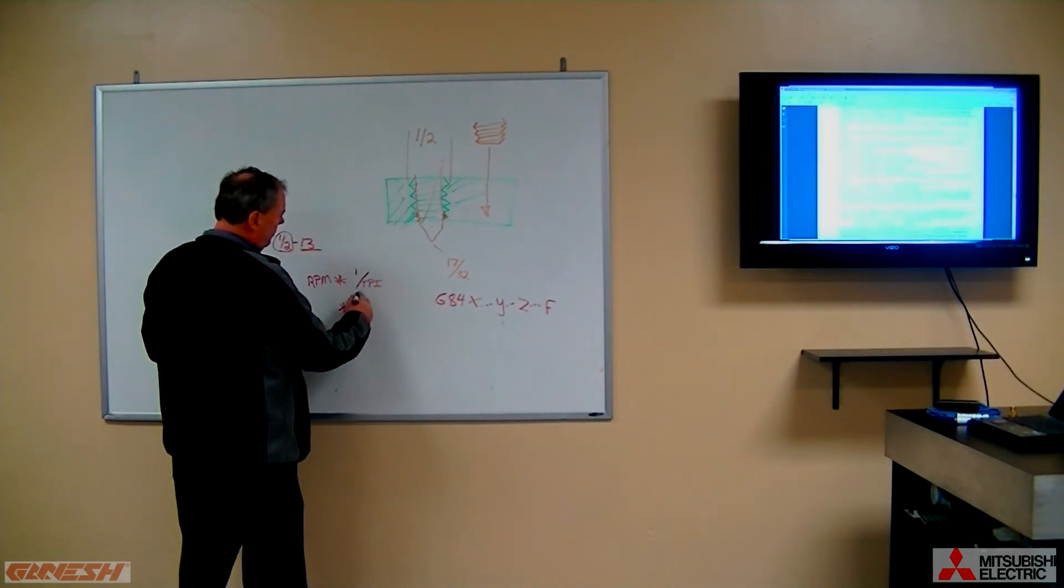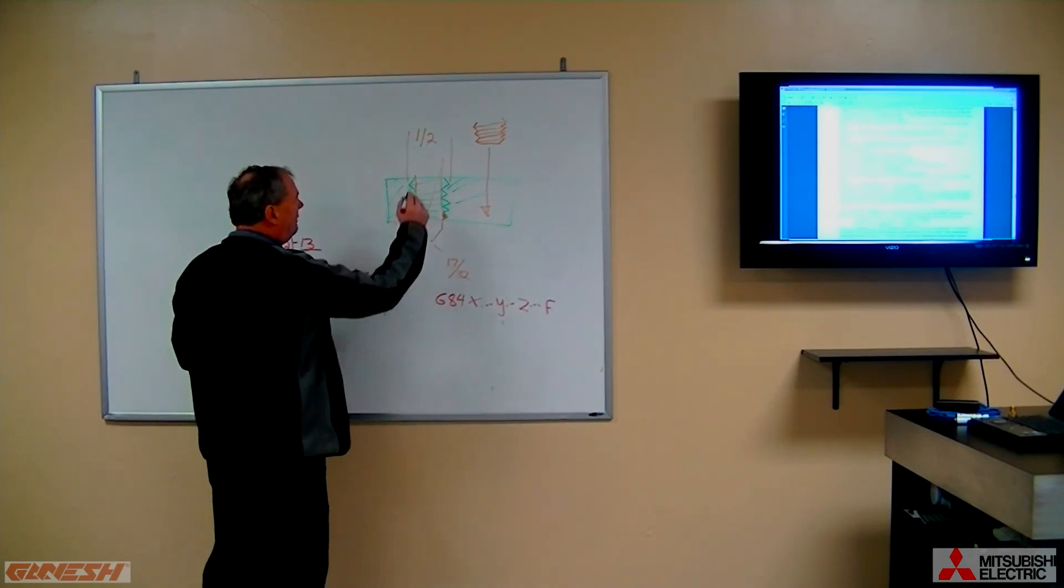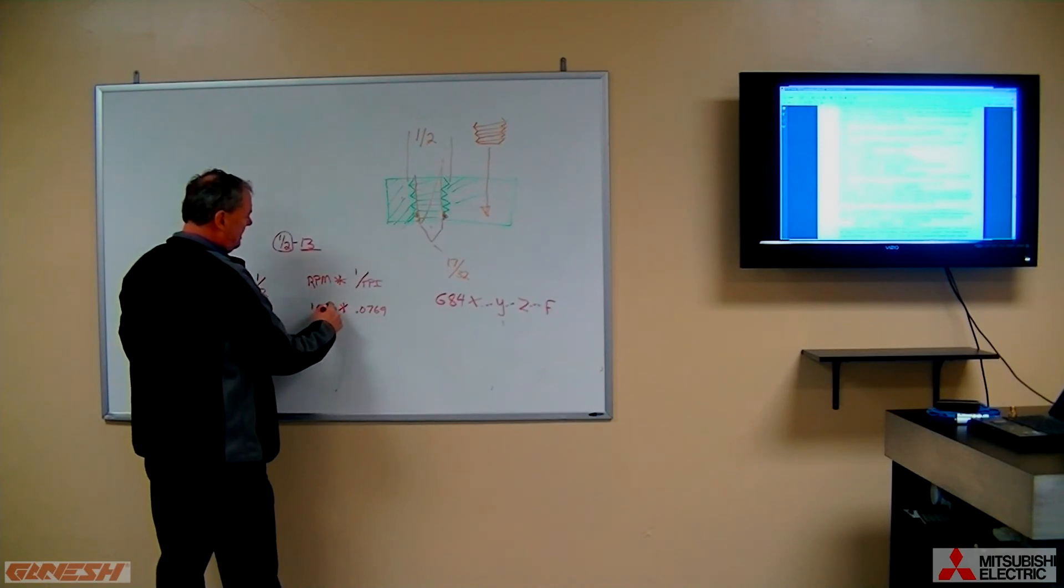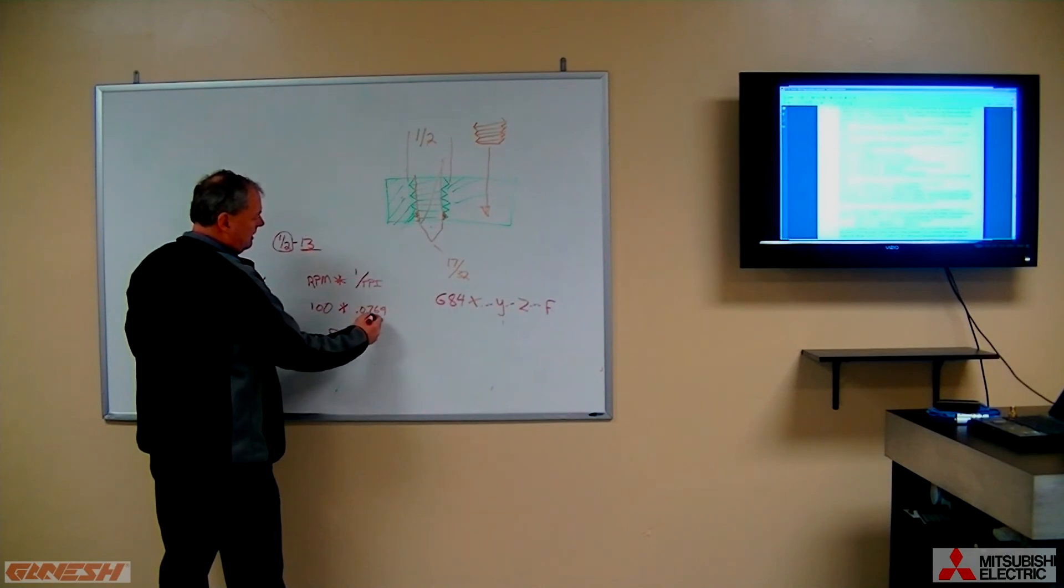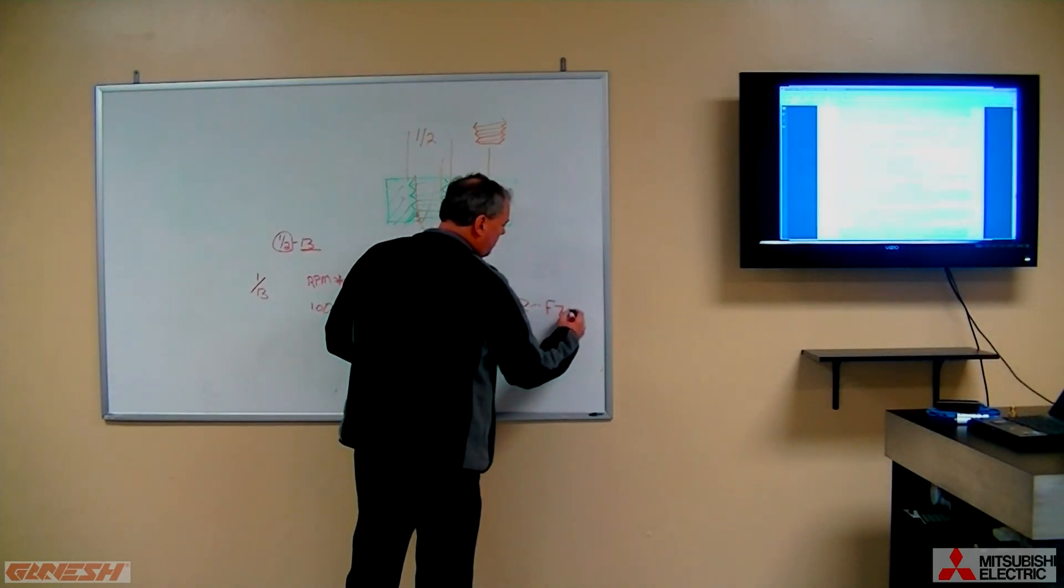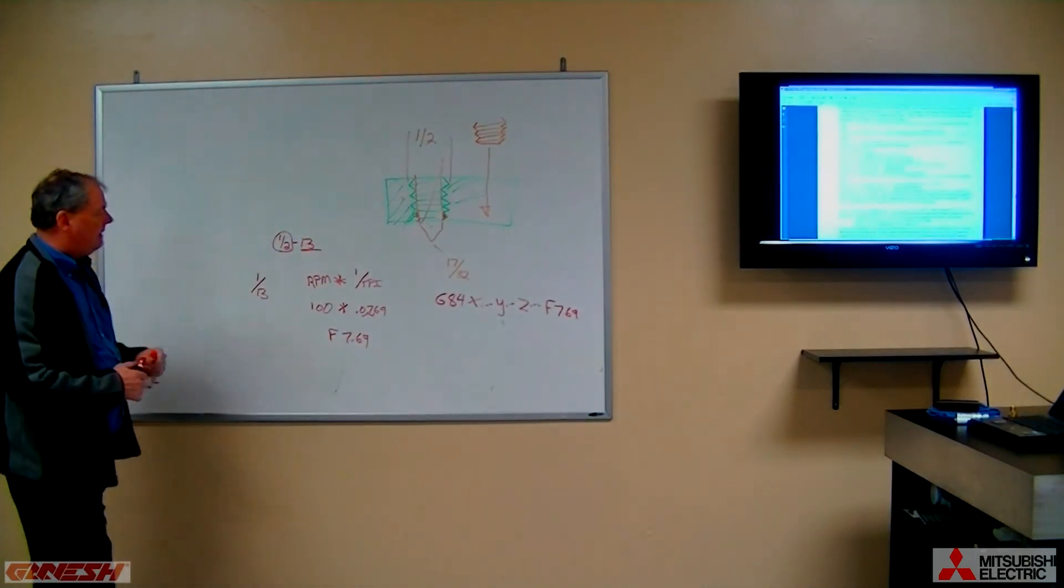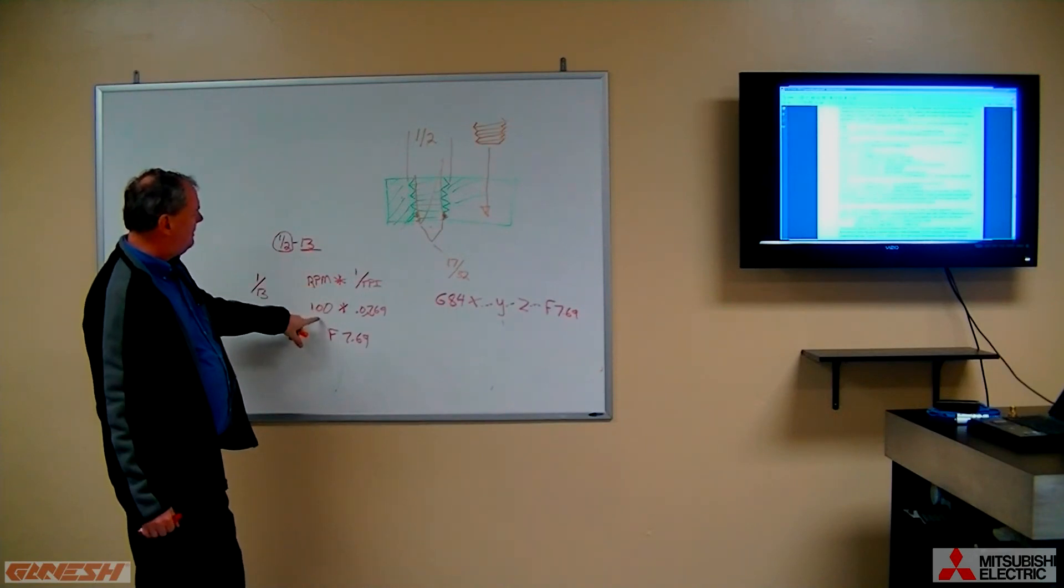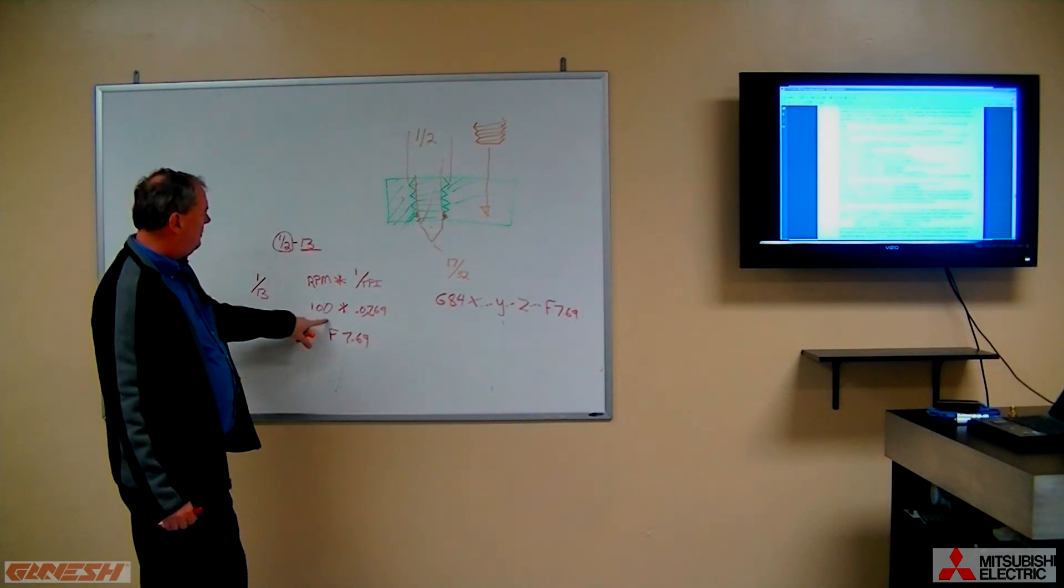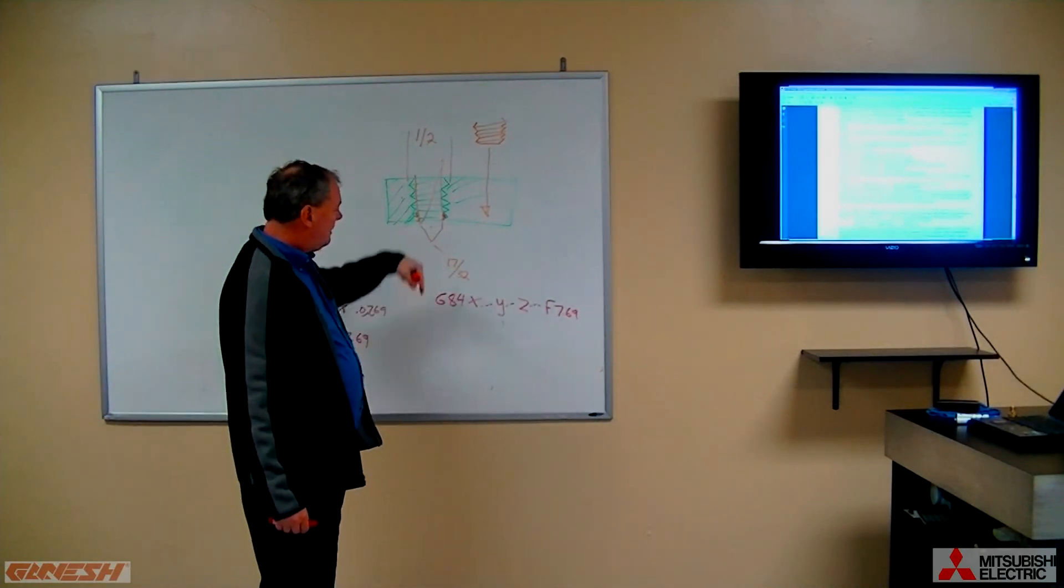So 1 over threads per inch is .0769 and if we turn on our machine at 100 RPM, our feed rate should equal 7.69 inches per revolution. That is the safest way to do threading feed rates. Take 1 over the threads per inch, multiply it by your RPM, and then you'll come up with a feed rate that is appropriate. And that's all you need to do.